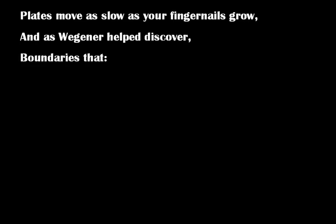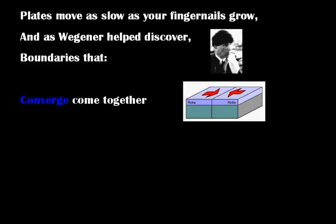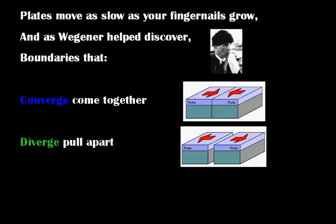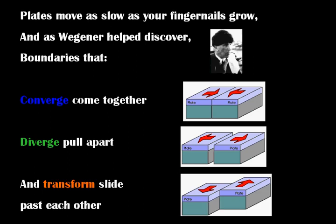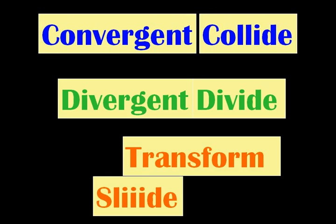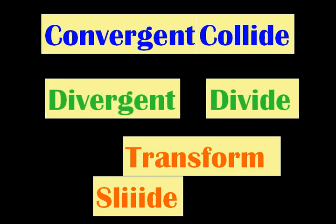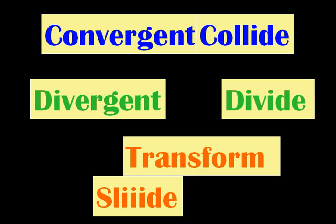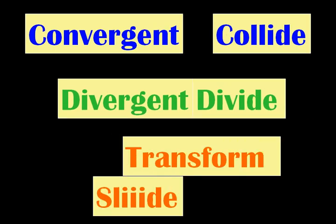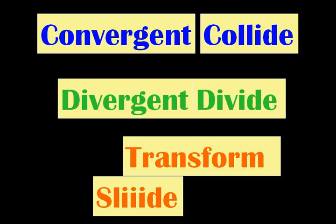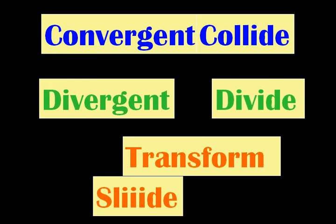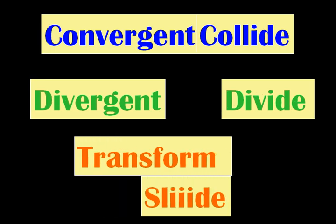Plates move as slow as your fingernails grow, and as Wegener helped discover, boundaries that converge — come together — diverge — pull apart — and transform — slide past each other. Converge and collide, diverge and divide, and transform, tectonic plates slide.